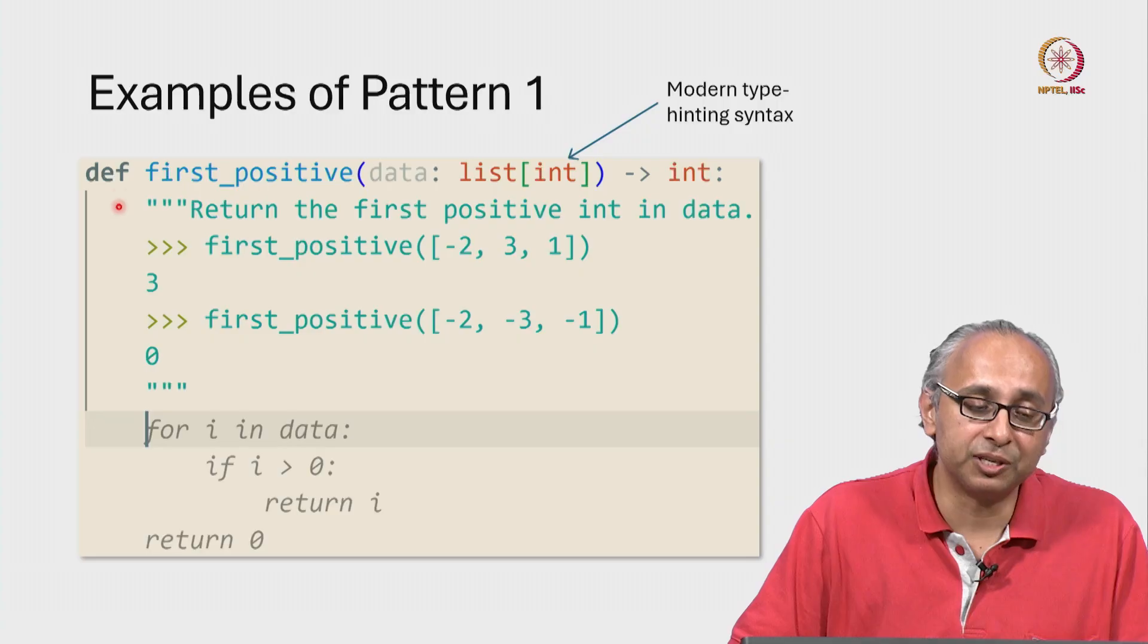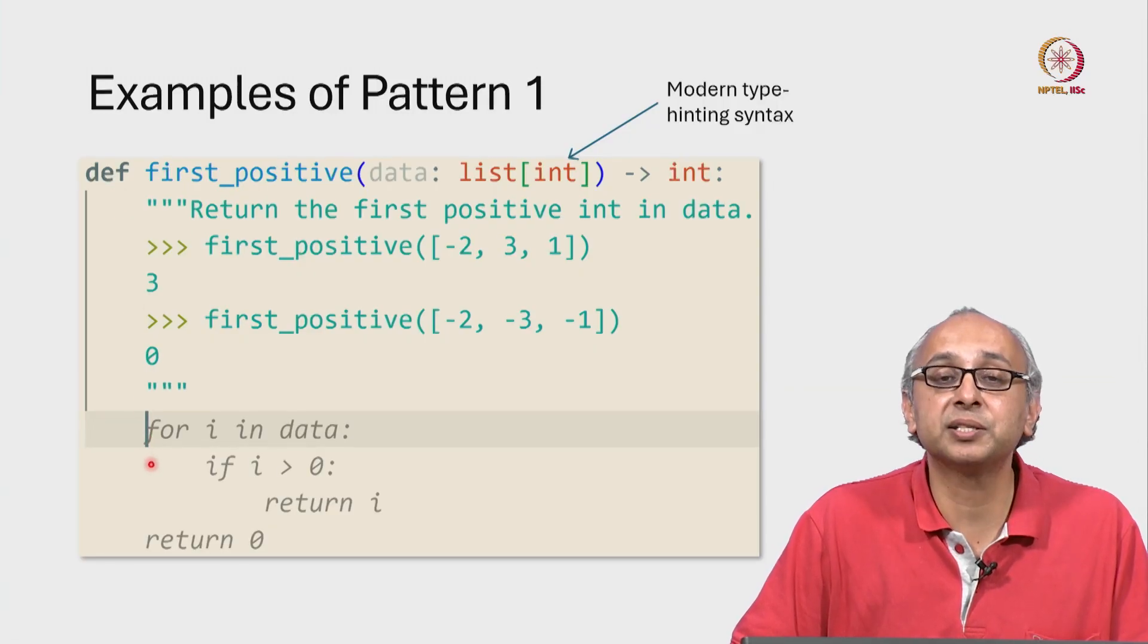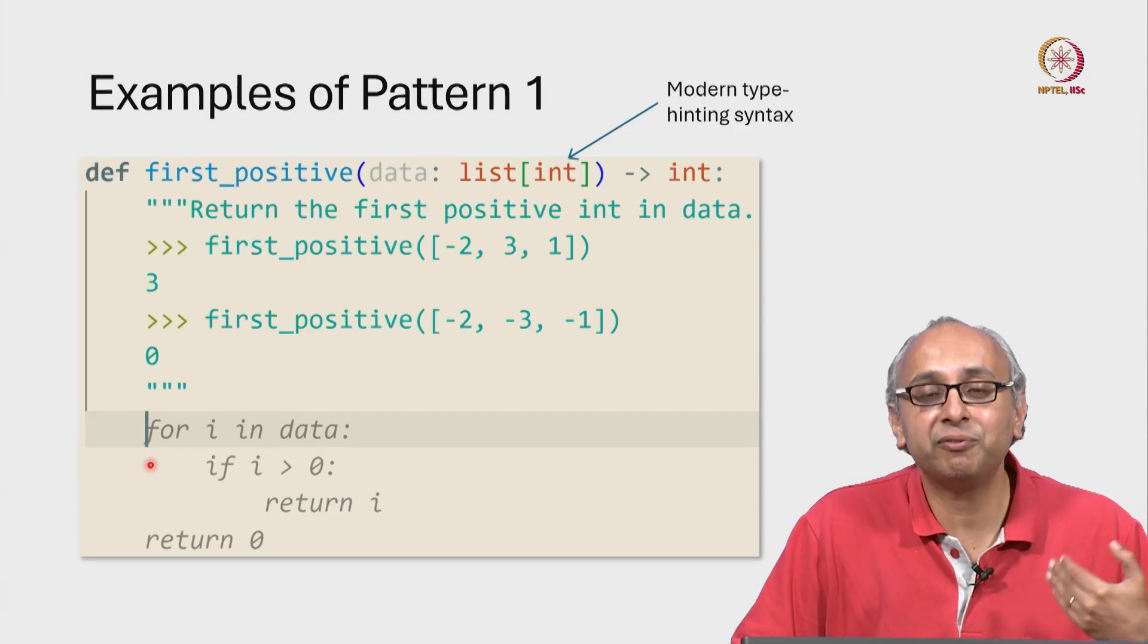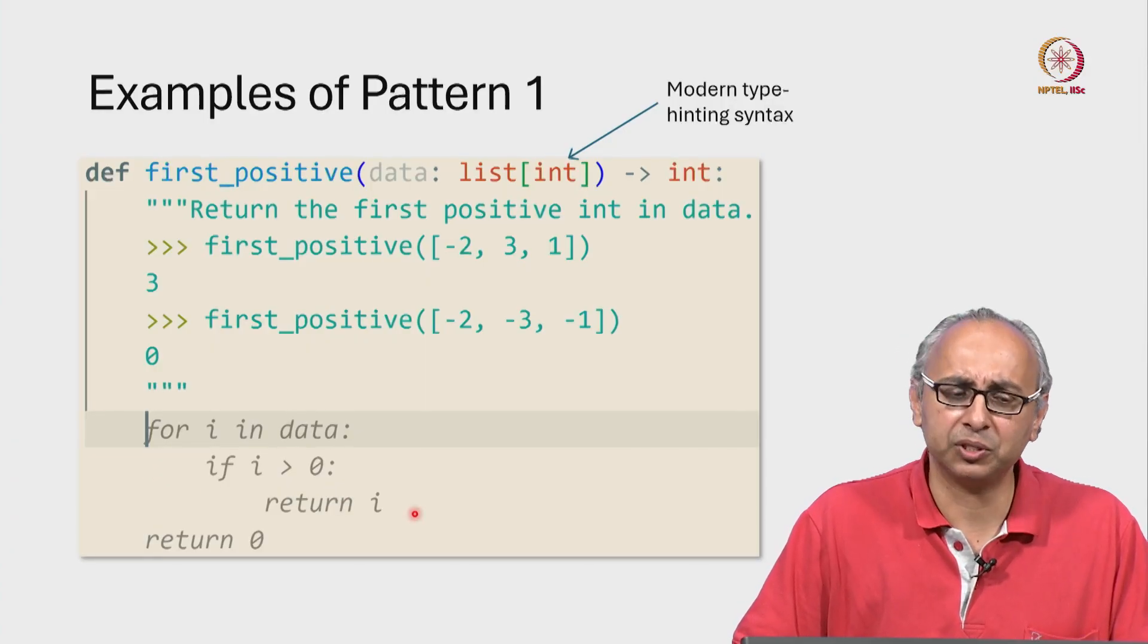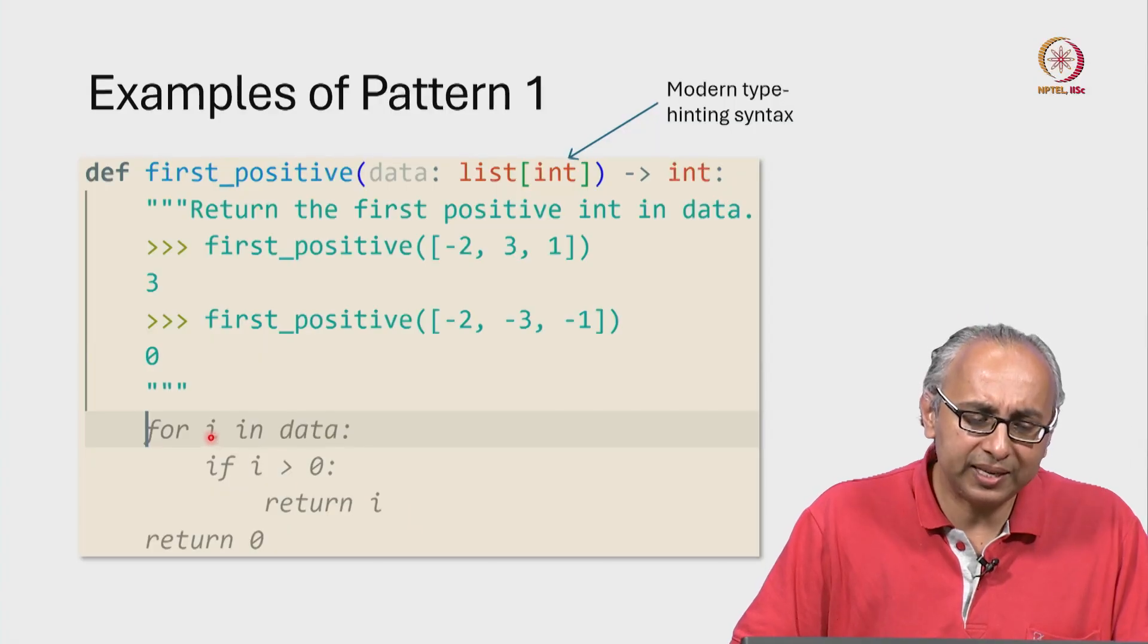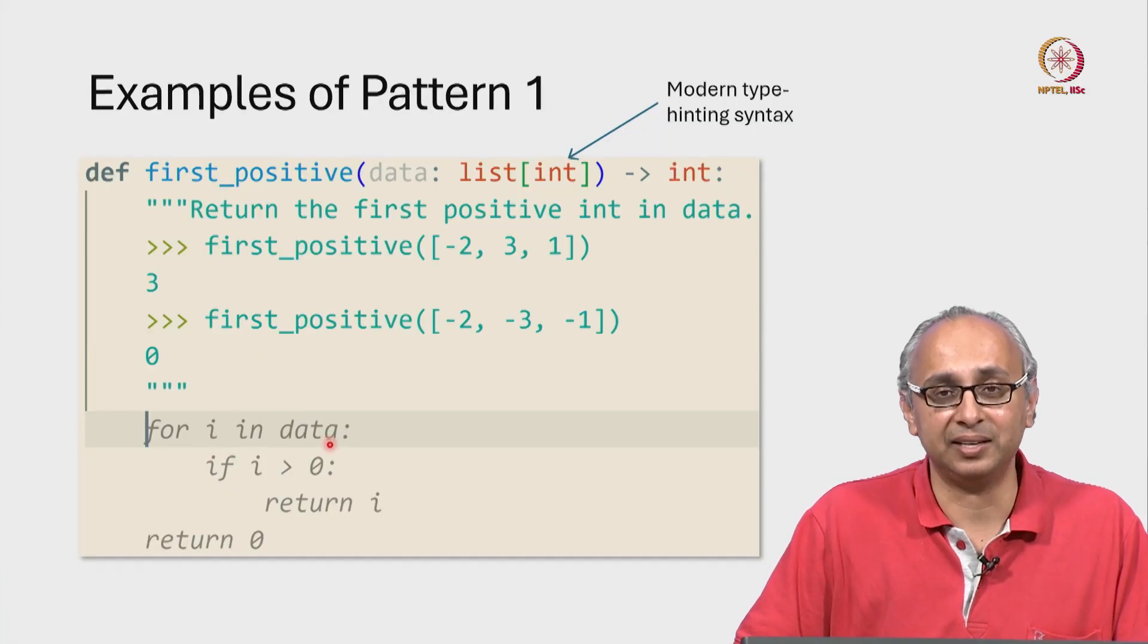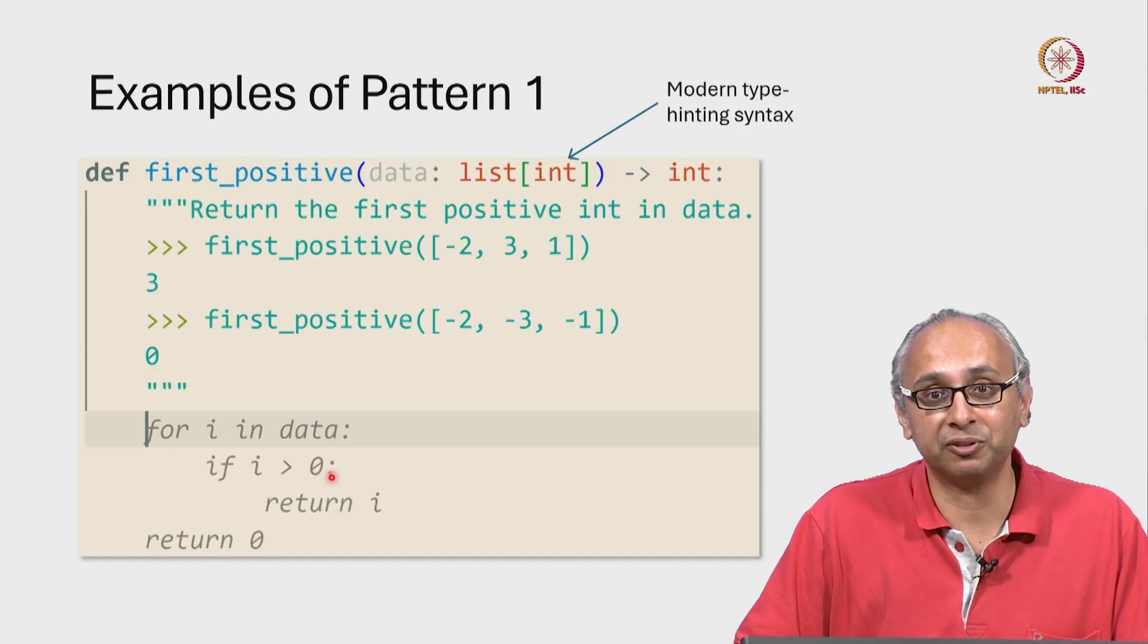Given this information, the minute we come down here, our cursor is blinking here, our generative AI steps in and it suggests this code. I'm generally quite happy with this code. How does it work? Well, it examines each i in data and if that i is greater than 0, it's a positive value, then we immediately return that i.